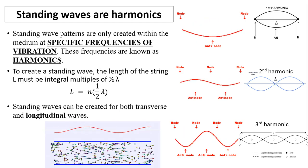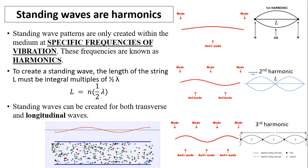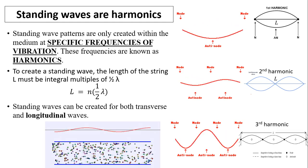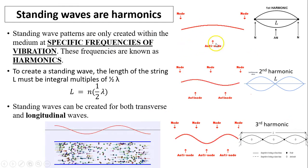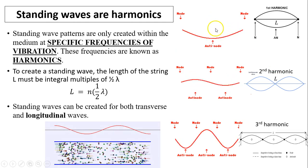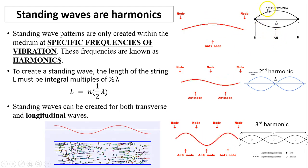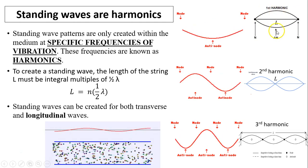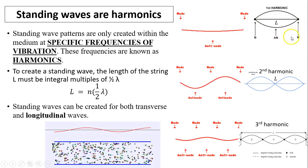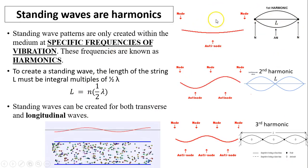Standing waves are harmonics. Standing wave patterns are only created within the medium at specific frequencies of vibration. Many instruments have standing waves — those are called harmonics. This animation could represent a string on a guitar. This is called the first harmonic: a standing wave going up and down. You may see a picture showing the point either at the top or bottom — that point is called an antinode. The endpoints are called nodes. The first harmonic has just one antinode.